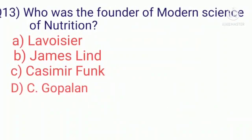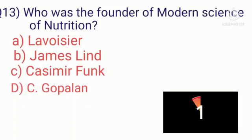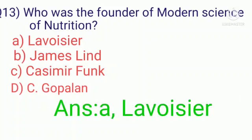Question 13: Who was the founder of the modern science of nutrition? A. Lavoisier, B. James Lynn, C. Casimir Funk, D. C. Gopalan. You have to answer in 10 seconds. Answer is A — Lavoisier was the founder of the modern science of nutrition.